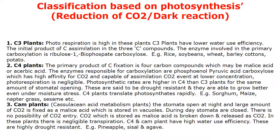Classification based on photosynthesis is based on the light or dark reactions, categorized into three kinds: C3, C4, and CAM plants. In C3 plants, photorespiration is high and water use efficiency is lower. The initial product of carbon assimilation is a 3-carbon compound.